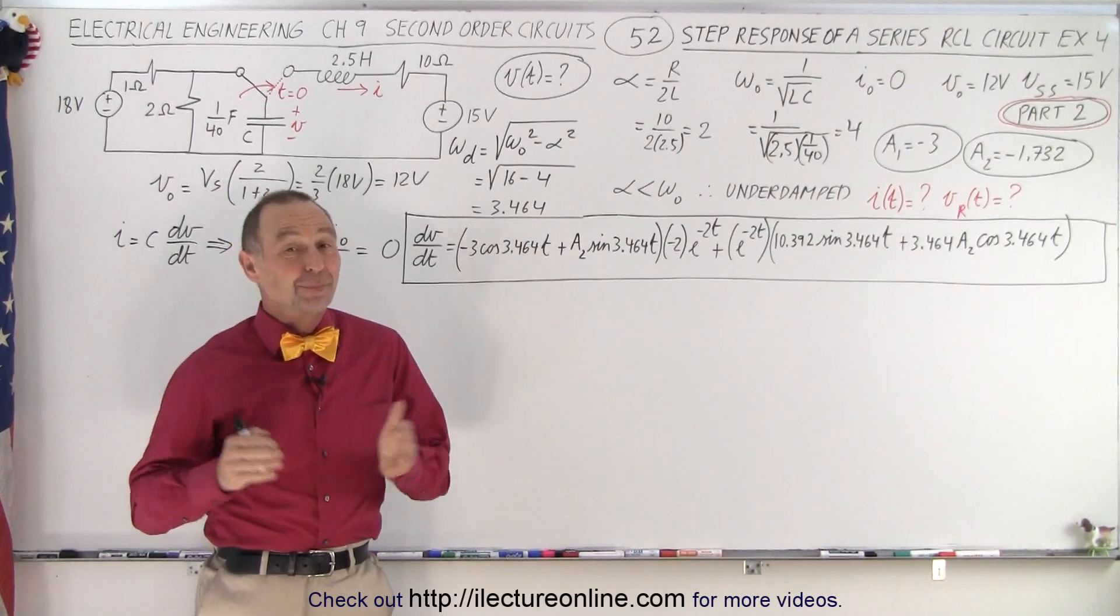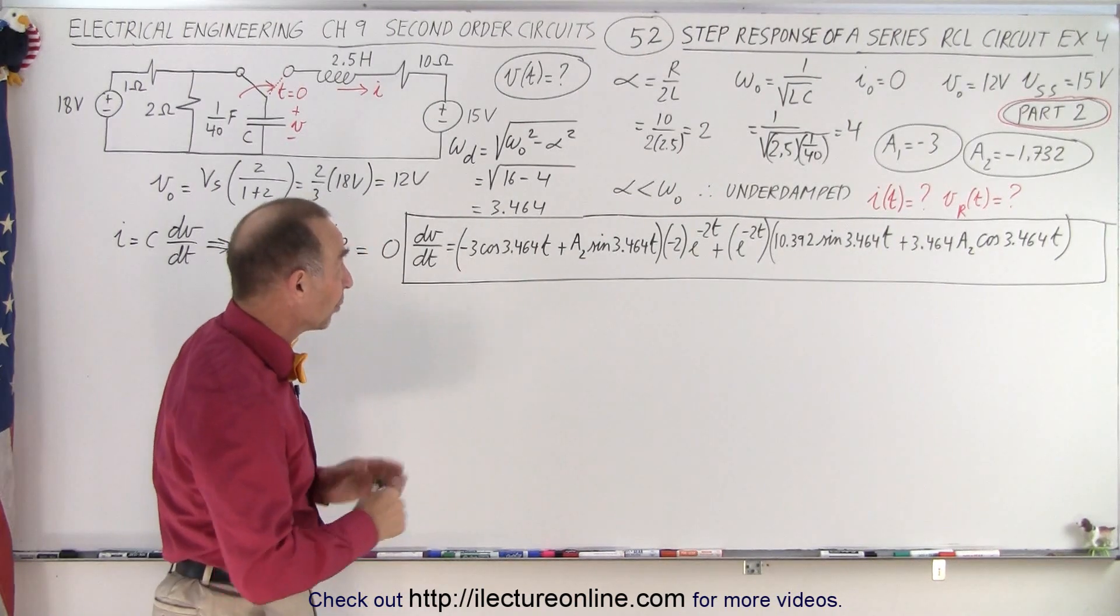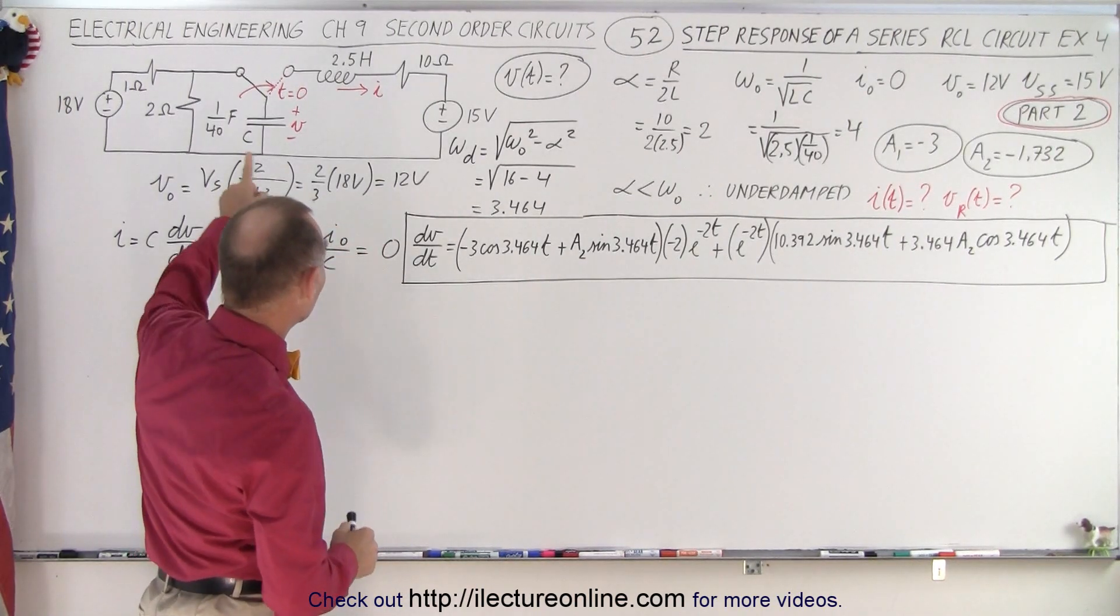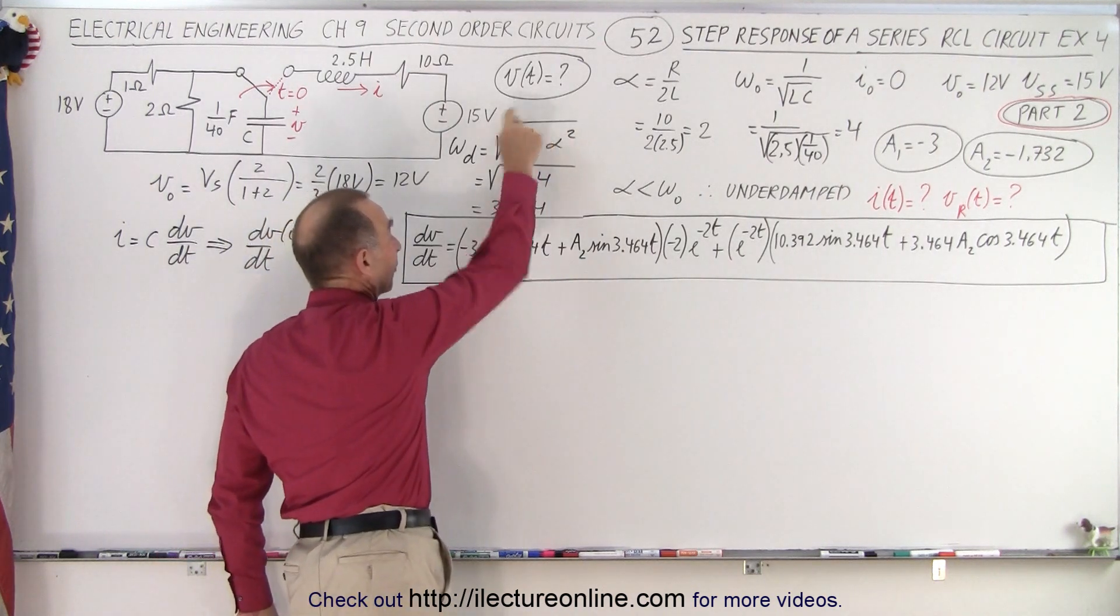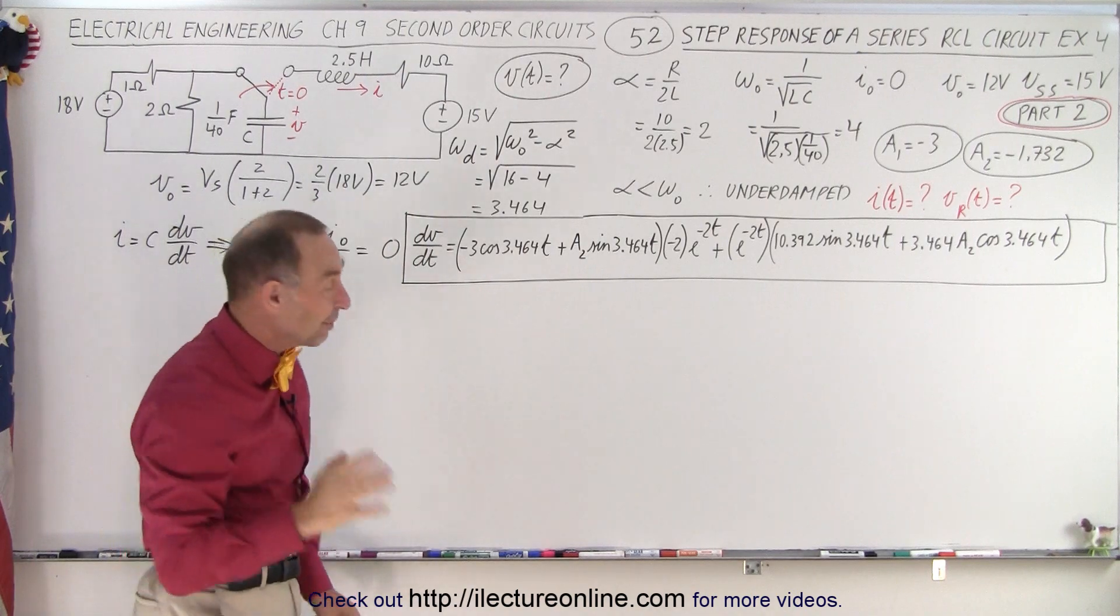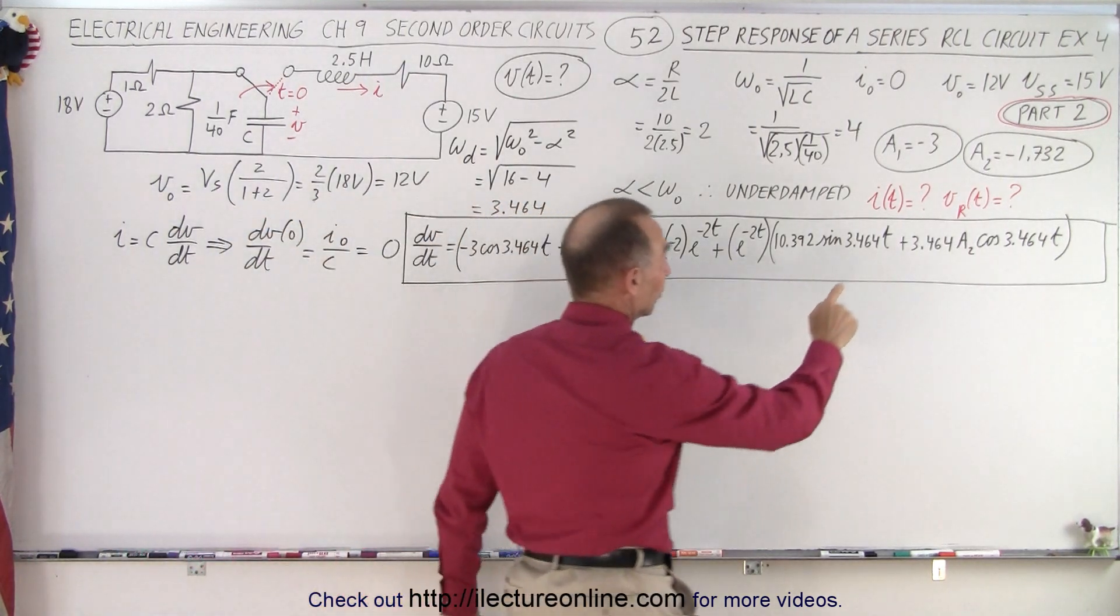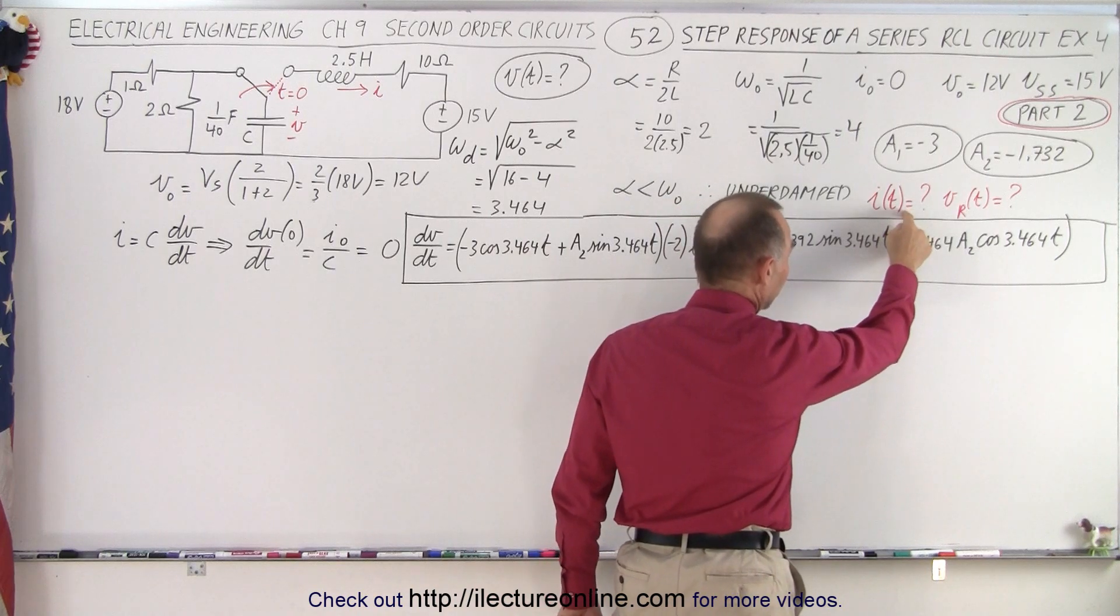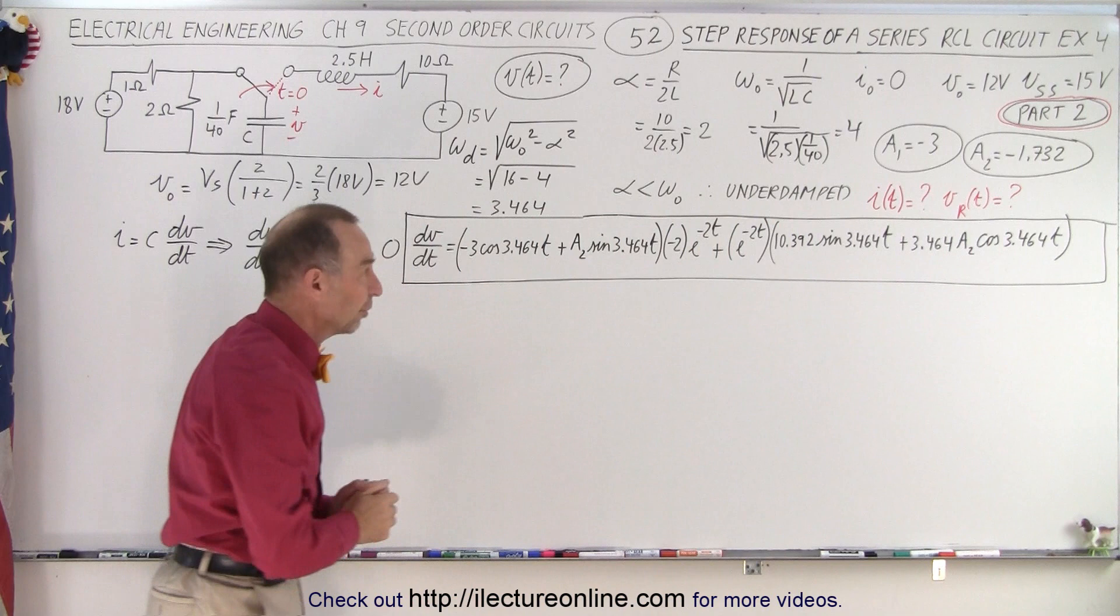Welcome to our lecture online. In the previous video, we ran out of room to complete the problem, so we're continuing with the same problem. Here's the circuit. In the previous problem, we found an equation for the voltage as a function of time. We ended up with the derivative of the voltage with respect to time. Now we're going to find an equation for the current with respect to time, and then find the voltage across the resistor with respect to time.